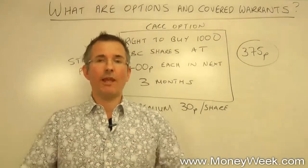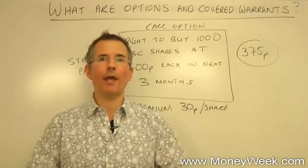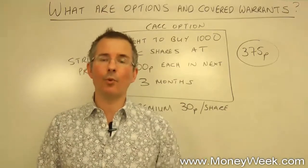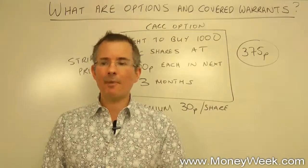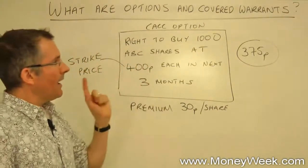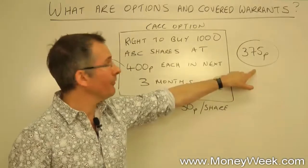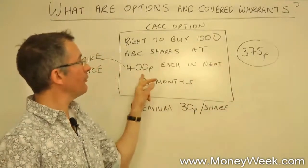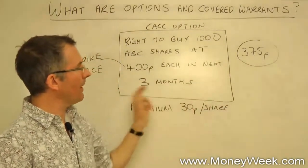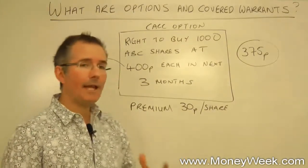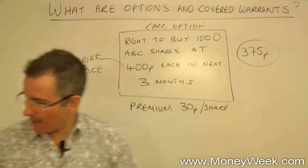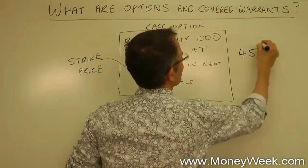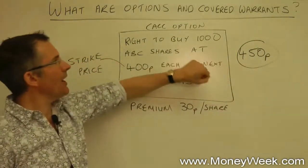How many investments can you name where you get 300 pounds in your pocket up front? So as the person who wrote the option and sold it, I'm quids in from the beginning. The question is, why did the person who bought the option just give me 300 pounds for a piece of paper? There must be something in it for them — and there is. If the share price takes off, which is what they're gambling on, they can make money. The market price is going to move; the strike isn't. So with three months to run, let's move that market price: two weeks later the ABC share price has shot up to 450 pence.